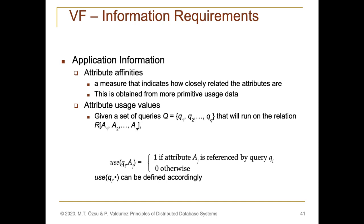The information requirements for vertical fragmentation include, from the application information perspective, attribute affinities. Attribute affinity is simply a measure that indicates how closely related the attributes are. We will have attributes a1 up to an in a given relation R, and the closeness between attributes can be calculated using attribute affinities. Attribute affinity is mainly obtained from primitive usage data — it is calculated from the frequency of usage of that attribute by a list of queries. Attribute usage values, which are the primitive input for attribute affinity, are also required application information for vertical fragmentation.